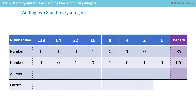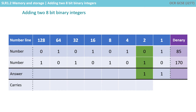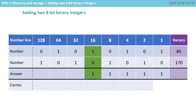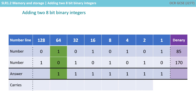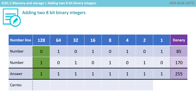I've written out those two binary numbers — the previous video showed how to do that, but here we're focusing on adding them together. Starting on the right-hand side with the column weighted 1 and following the four rules: 1 plus 0 is 1; 0 plus 1 is 1; 1 plus 0 is 1; 0 plus 1 is 1; 1 plus 0 is 1; 0 plus 1 is 1; 1 plus 0 is 1; and 0 plus 1 is 1.